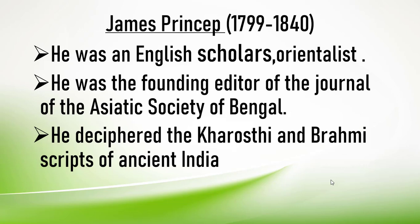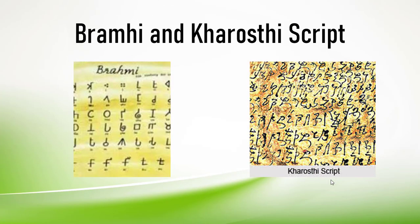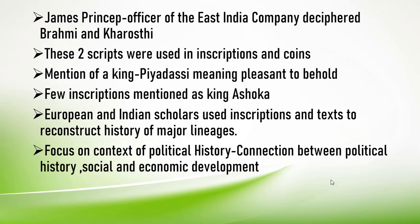Our chapter starts with James Prinsep, 1799 to 1840. He was an English scholar and orientalist — a European scholar. He was also the founding editor of the Journal of the Asiatic Society of Bengal. Most importantly, he deciphered the Kharoshti and Brahmi scripts of ancient India. You can see here pictures of Brahmi and Kharoshti scripts. James Prinsep was an officer of the East India Company, and he deciphered both these scripts which were used in inscriptions and coins.